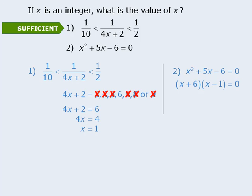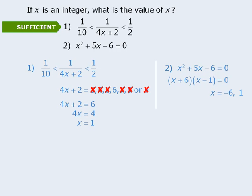From here, we can see that if x plus 6 times x minus 1 equals 0, then x must equal either negative 6 or 1. Since we have two possible values for x here, statement 2 is not sufficient.